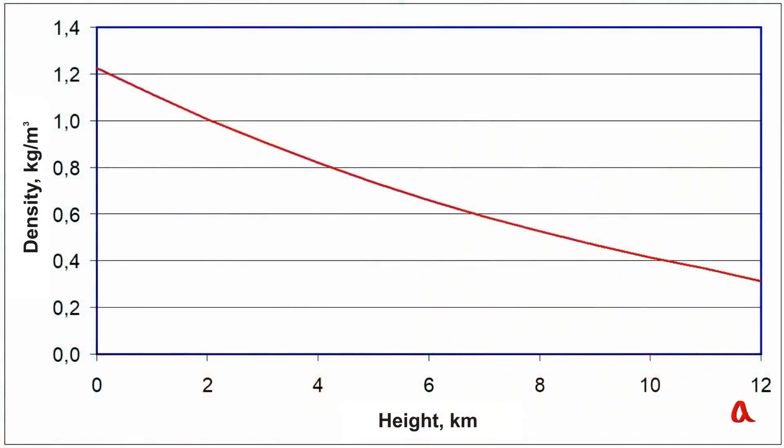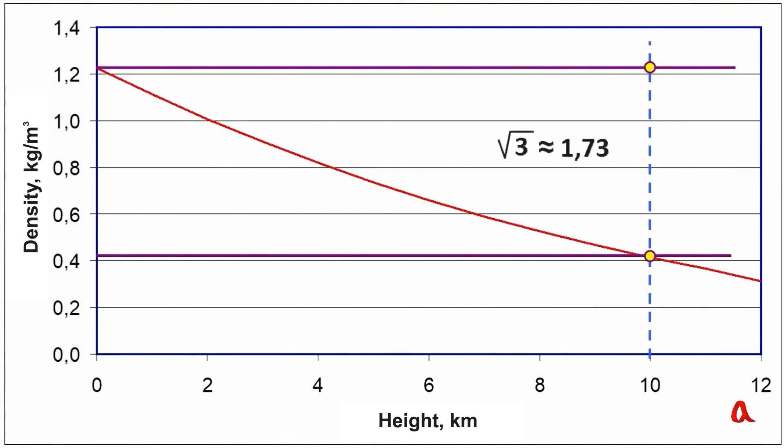And now let's look at the graph of the so-called standard atmosphere, showing how air density decreases with altitude. And we will see that at an altitude of 10 kilometers above sea level, the air density is approximately three times less than at sea level. And this means that with the same engine thrust at an altitude of 10 kilometers, the airplane can achieve a speed greater by the square root of three, approximately 1.7 times faster than when flying just above sea level.